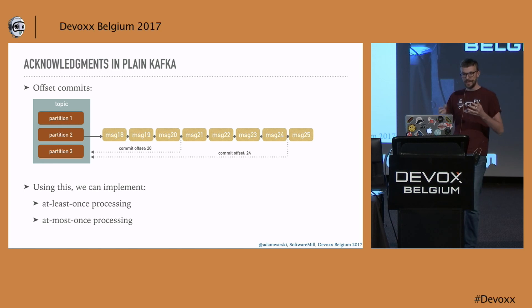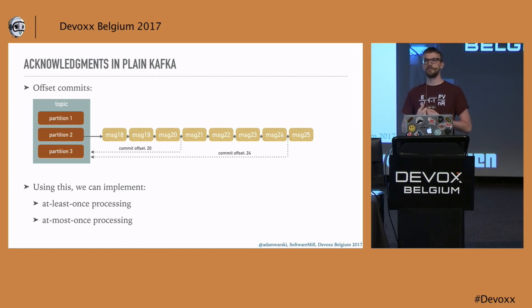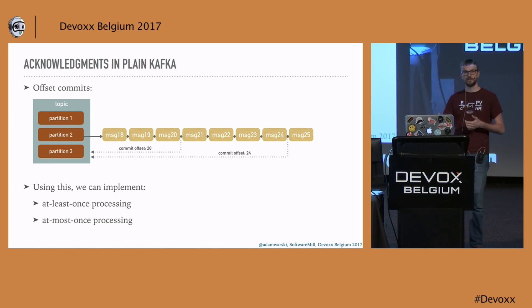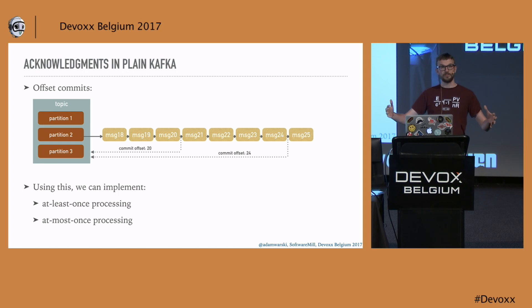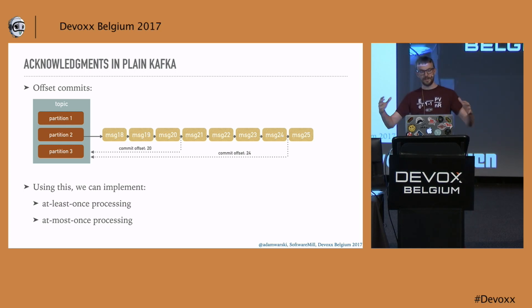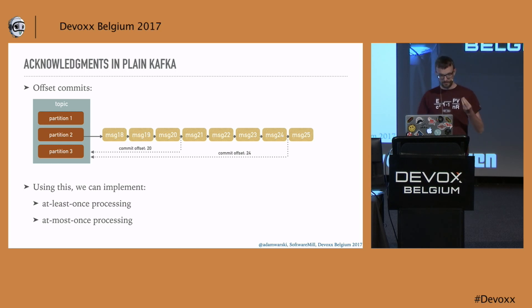Usually we also want to read data from a topic, so we create a consumer — typically a number of consumers. These consumers form a consumer group, and we create multiple consumers for two reasons: performance, so we can process messages in parallel, and fault tolerance, so if a consumer dies another one takes over. In a single consumer group there are many consumers, and Kafka assigns to each consumer a set of partitions. Each consumer gets a set of partitions, and all consumers in the group get all partitions in total — the partitions are divided among the consumers.